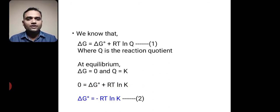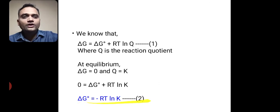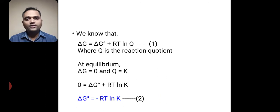Rearranging, we get delta G0 is equal to minus RT ln of K. This is important equation. Delta G0 is equal to minus RT ln of K.